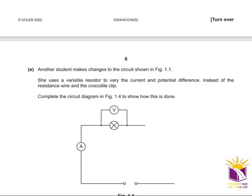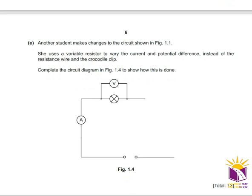Another student modifies the circuit from figure 1.1, using a variable resistor to vary the current and potential difference instead of the resistance wire and crocodile clip. Complete the circuit diagram: draw the power supply, a variable resistor to change the current, and optionally a switch to turn the circuit on and off.